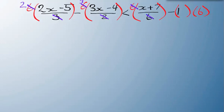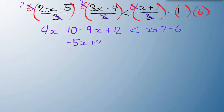Those 2 cancel out. So now I've got 4x minus 10 minus 9x plus 12 is greater than x plus 7 minus 6. Let's combine all the like terms. Minus 5x plus 2 is less than x plus 1.